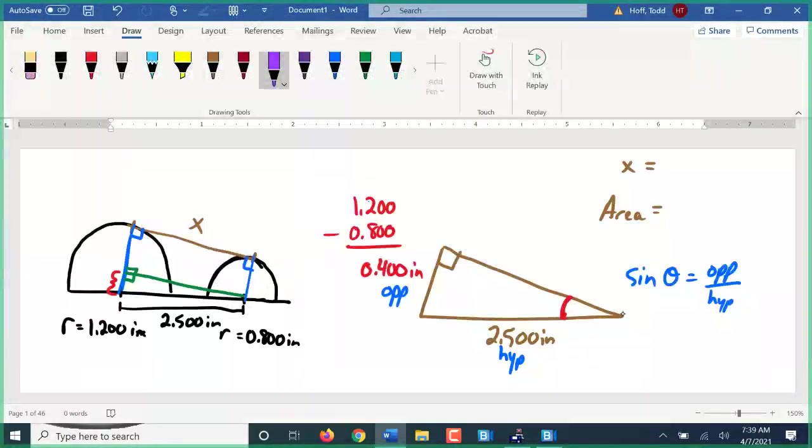Sine of theta equals opposite over hypotenuse. Now, we don't know the angle. We do know the opposite side is 0.4. My hypotenuse is 2.5.